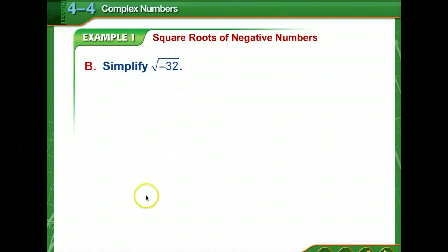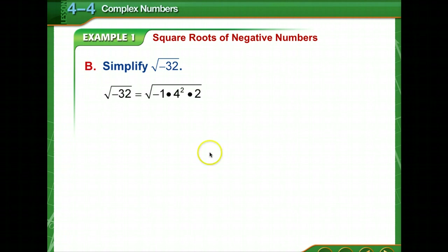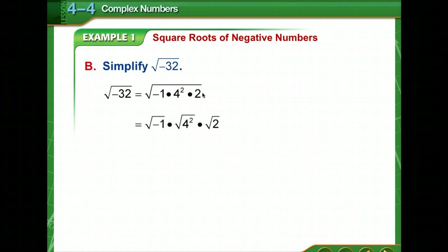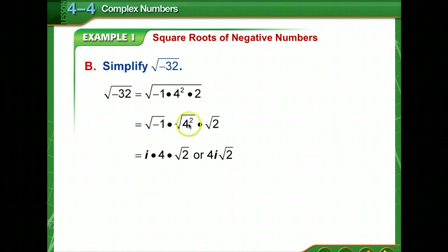Let's simplify the square root of negative 32. It's negative 1 times 4 squared times 2 — since 16 times 2 is 32. We put each under its own radical: the square root of negative 1 is i, and the square root of 4 squared is 4, times the square root of 2. So the answer is 4i square root of 2.